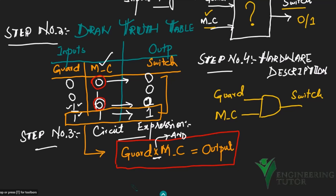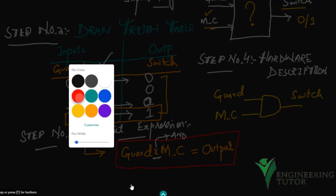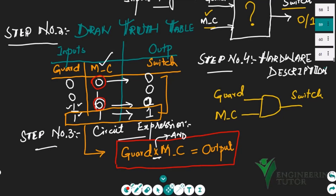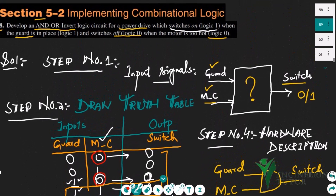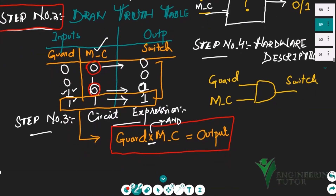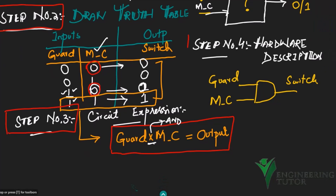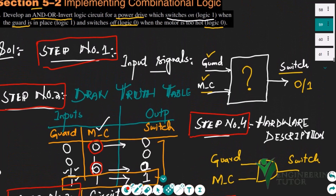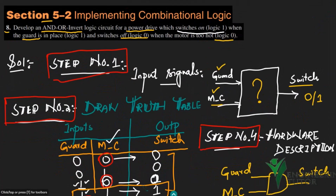That is the overall design process. Step one: write everything in your own language. Step two: draw the truth table. Step three: write the Boolean expression for the circuit. Step four: describe the digital hardware to be used. We will proceed with more problems in the upcoming video. Take care and see you soon.